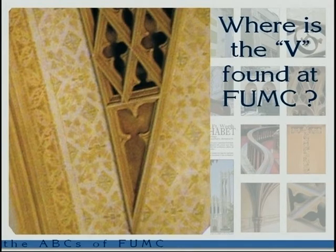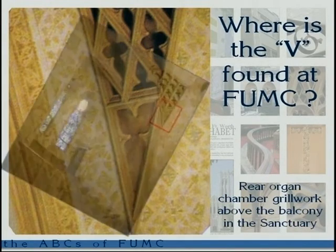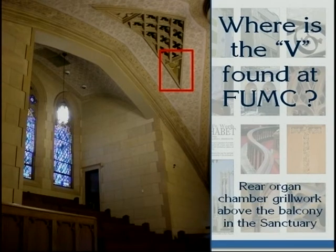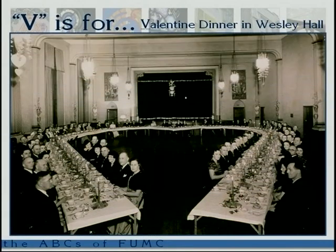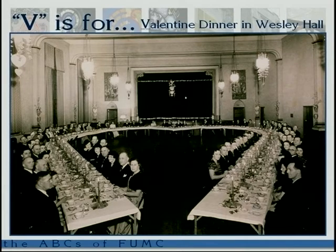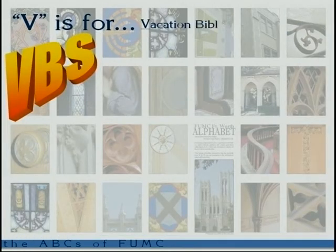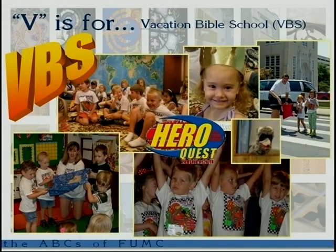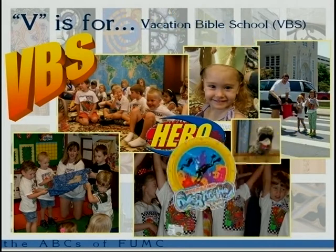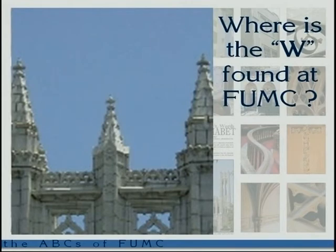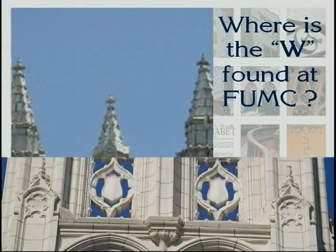Where's the V found? You can tell by the stenciling around it that it's in the ceiling of the sanctuary — it's what they call the antiphonal area of the organ. With the organ restoration they'll be putting organ pipes in the back, so we'll actually have surround sound. V is also for Valentine — there's an old photograph of Wesley Hall with a wooden floor and a heart-shaped table set for Valentine's Day. And V is for Vacation Bible School — Mark Burroughs has done a wonderful job growing the children's ministry and is actually working with the national Methodist Church on the VBS curriculum for the year after next.